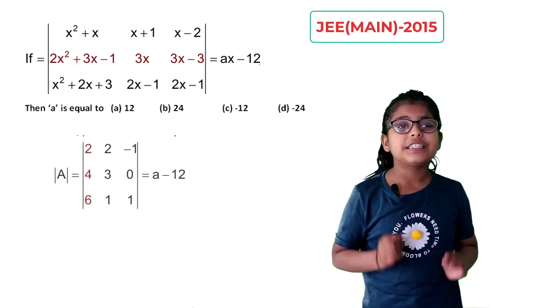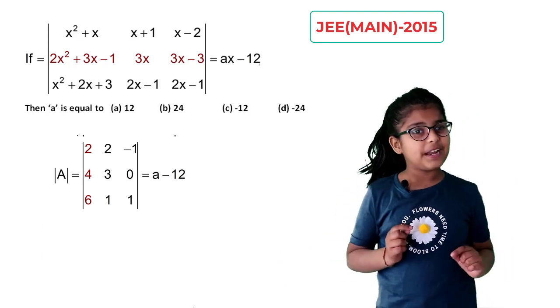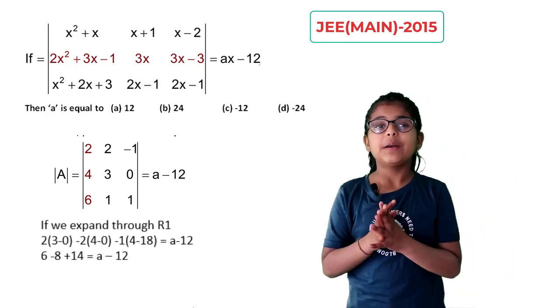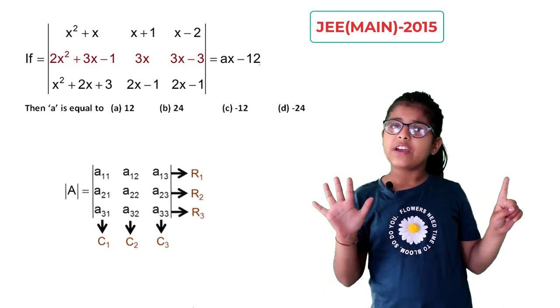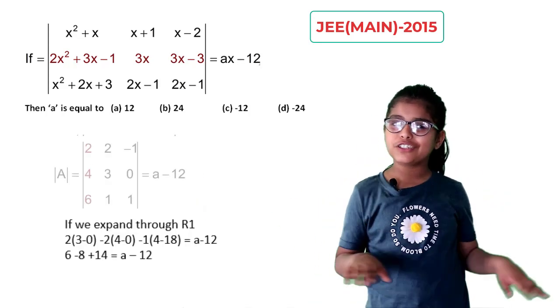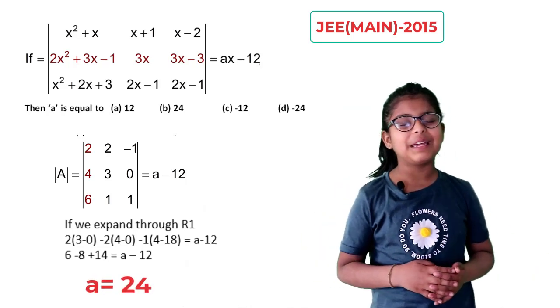Then this question will be easy for you. After simplification, this determinant is equal to A - 12. Now, expand through row 1. As we know, we can expand by 6 ways. After simplification, we get A equal to 24. The correct choice is B.